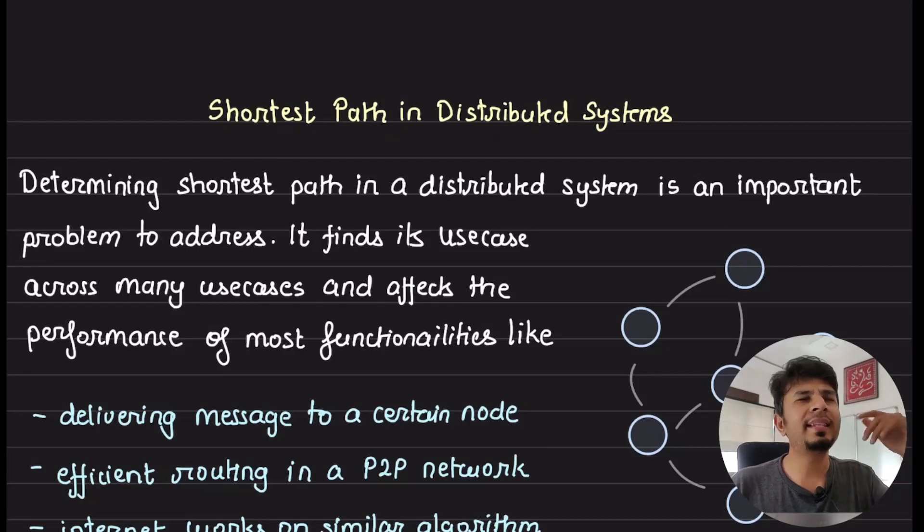We may think network, graph, efficient path, and shortest path. Can we not use a traditional shortest path algorithm in this setup? We cannot, because it is a distributed system.